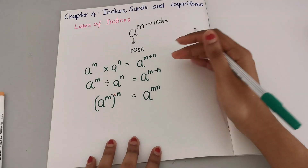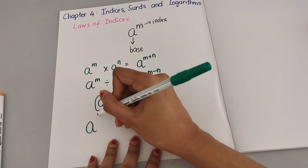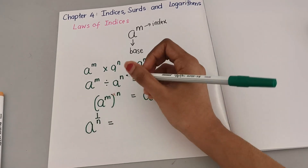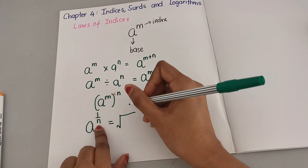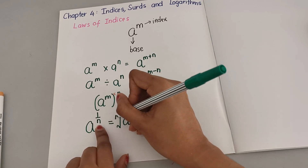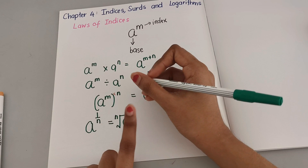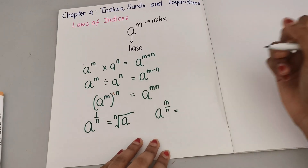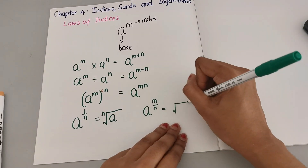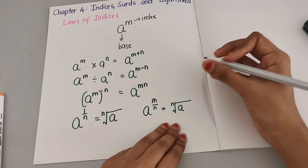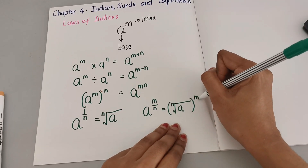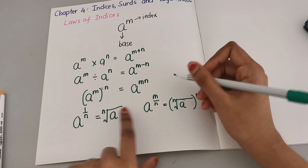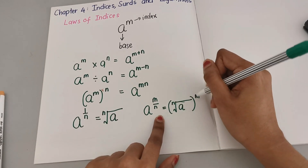And what if you have A to the power of one over N? Now this one can be represented as the Nth root of A. So A to the power of one over N is the Nth root of A. Now if it's A to the power M over N, we're going to write it as the Nth root of A, but this time the M is going to be outside as the power. So the N belongs as the root and M becomes the power outside.